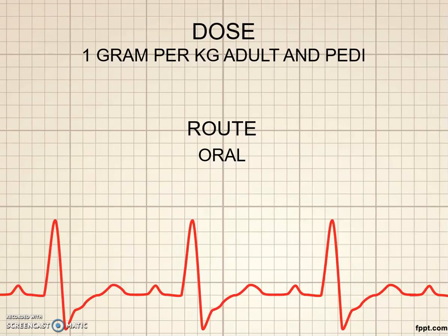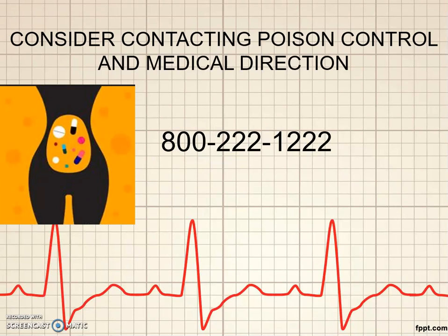The route is oral — they have to drink it. Anytime we're talking about poisons, you want to consider contacting poison control and possibly medical direction depending on your local protocols. The number listed here is the national number for poison control. Especially if you can find the medication or whatever material they took, if you call them they can give you all the information and recommendations on what to do. If it's not quite falling within your protocols, contact medical direction, tell them what poison control recommends, and get their recommendation. I would definitely keep this number in your phone or memorize it — this is not something you use all the time, but when you need it, you need to have it handy.